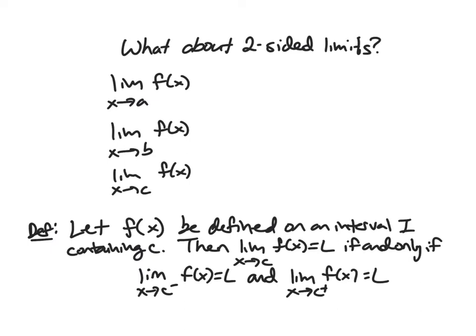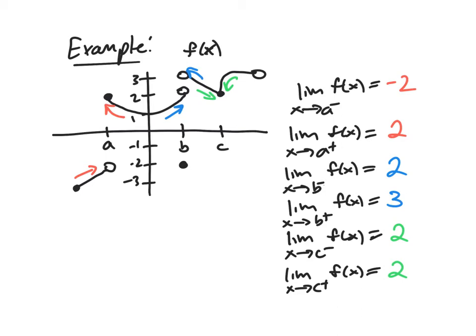if and only if the limit as X approaches C from the left equals L, and the limit as X approaches C from the right equals L. So basically, both of the one-sided limits have to exist and be the same thing.